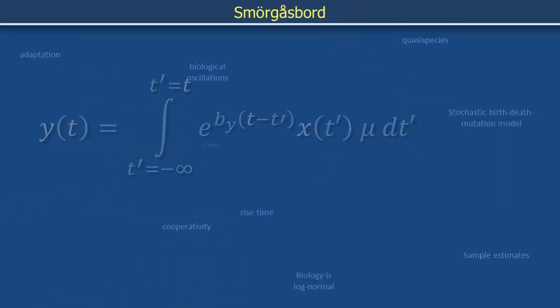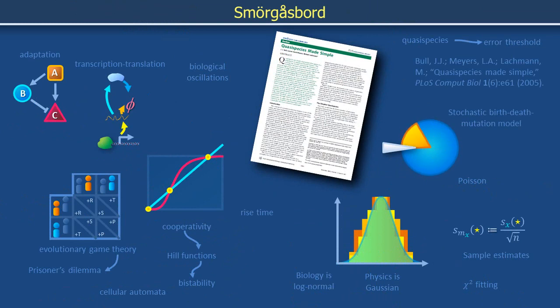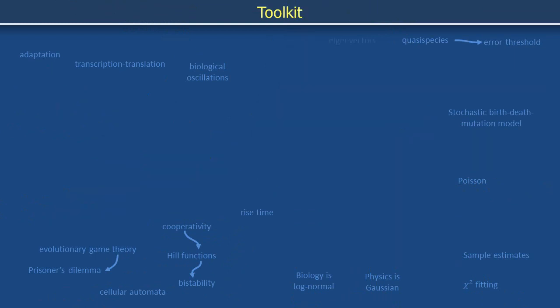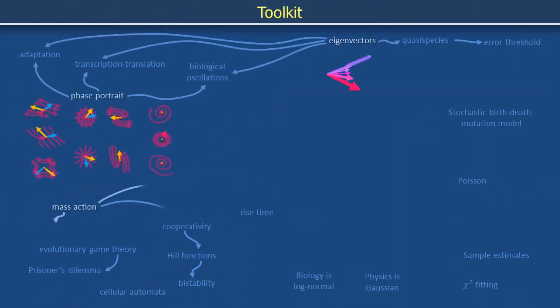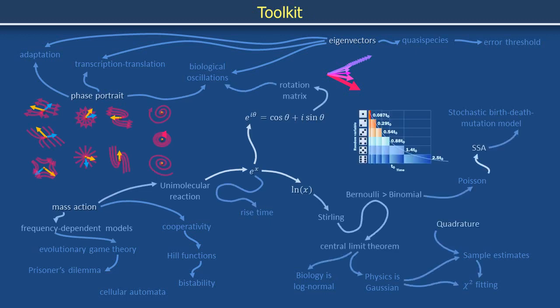When you pull apart the poetry, a lot of quantitative biology starts to look like the repeated application of a small toolbox of mathematical tricks. Where do these tricks come from?